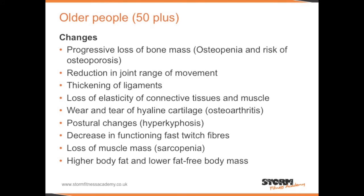Older people 50+. Older people may experience progressive loss of bone mass, known as osteopenia — if this progresses it will develop into osteoporosis. They may also experience a reduction in joint range of movement, thickening of ligaments, loss of elasticity of connective tissues and muscle, wear and tear of hyaline cartilage which can progress into osteoarthritis, postural changes such as hyperkyphosis, and a decrease in functioning fast-twitch fibres.